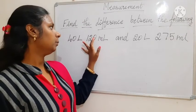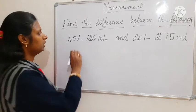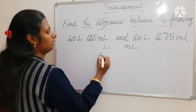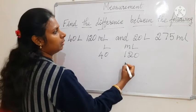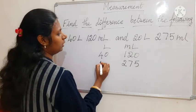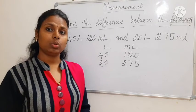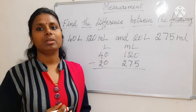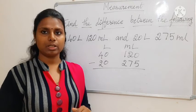Now: 40 litre 120 milliliter minus 20 litre 275 milliliter. So we write the units litre and milliliter. First number: 40 litre and 120 milliliter. Second number: 275 milliliter and 20 litre. Always remember, when writing numbers in subtraction, we write the bigger number on top, then the next number below, then we subtract.